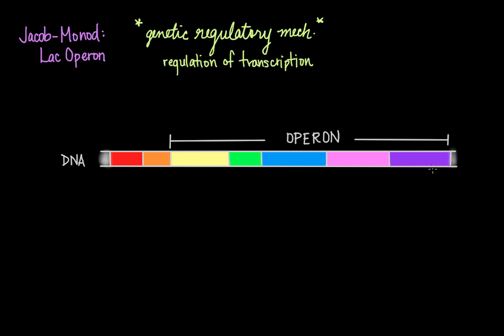The LAC operon is an example of an inducible set of genes which are responsible for importing and breaking down the sugar molecule lactose to use as a source of energy. In the event that glucose, which is the ideal source of carbon and energy for a cell, is not available, the cell has a backup source of energy in the form of lactose. The name LAC operon comes from lactose, the inducer molecule for the operon.